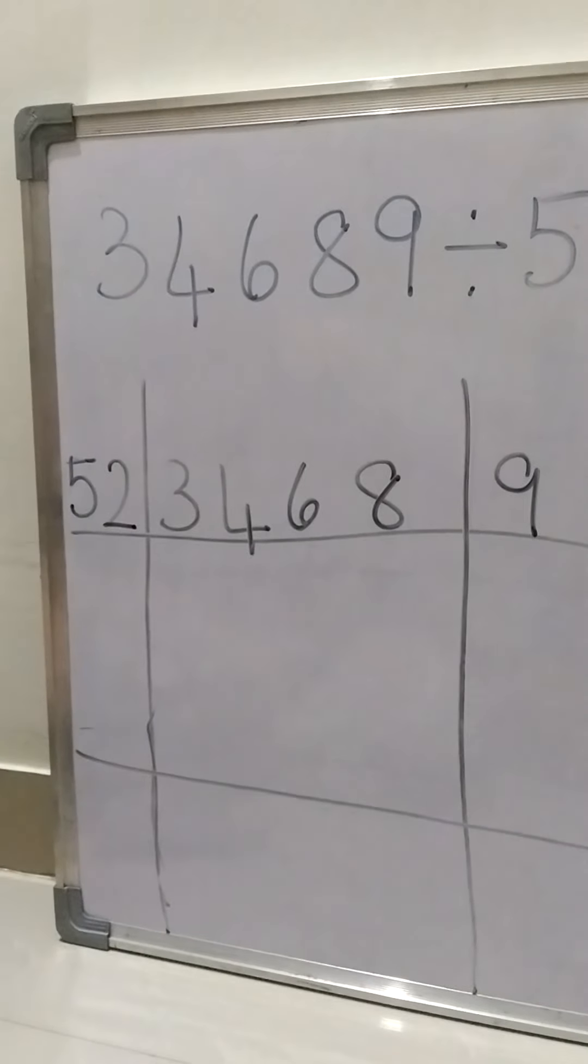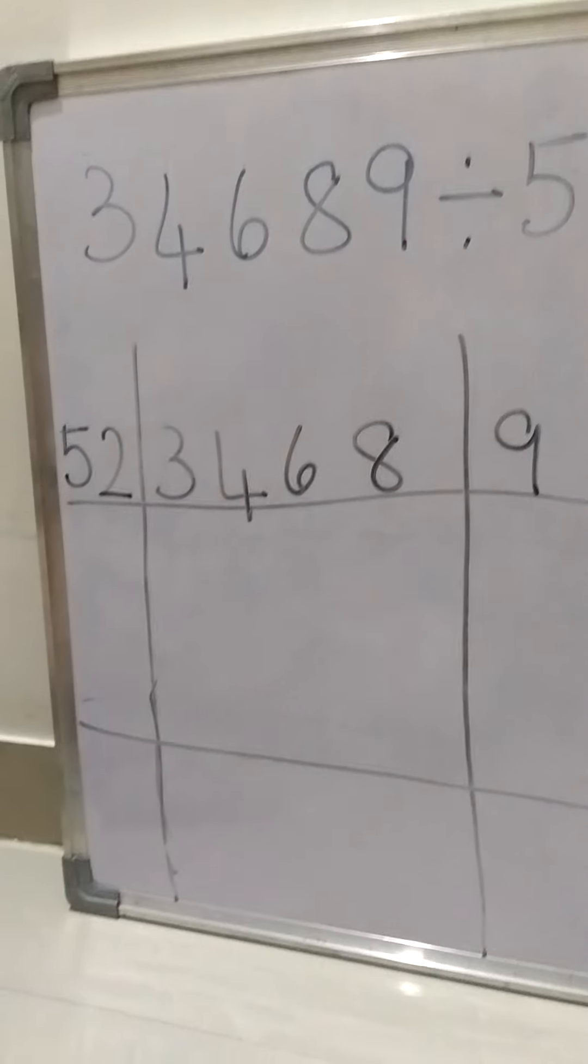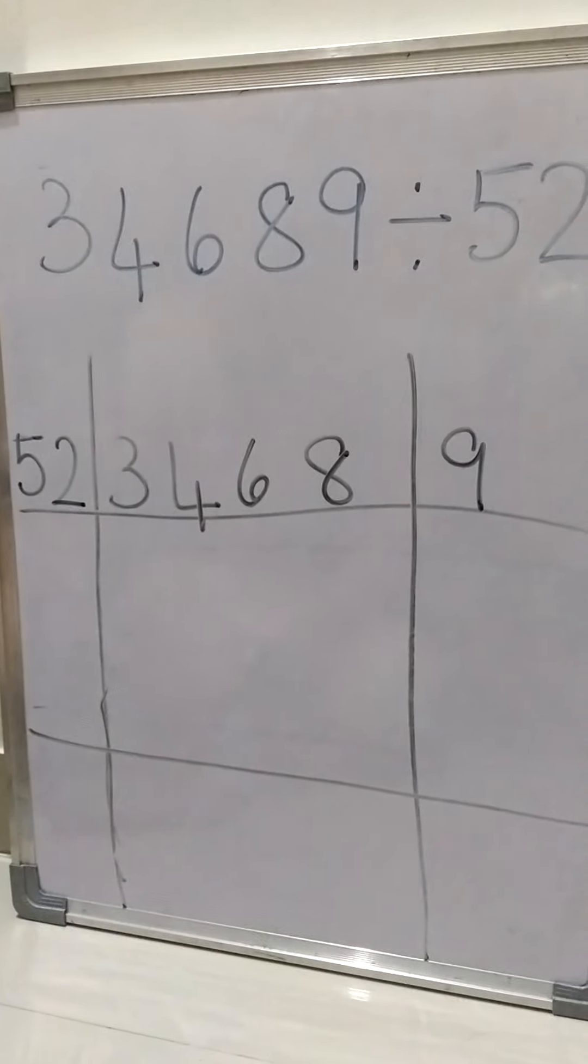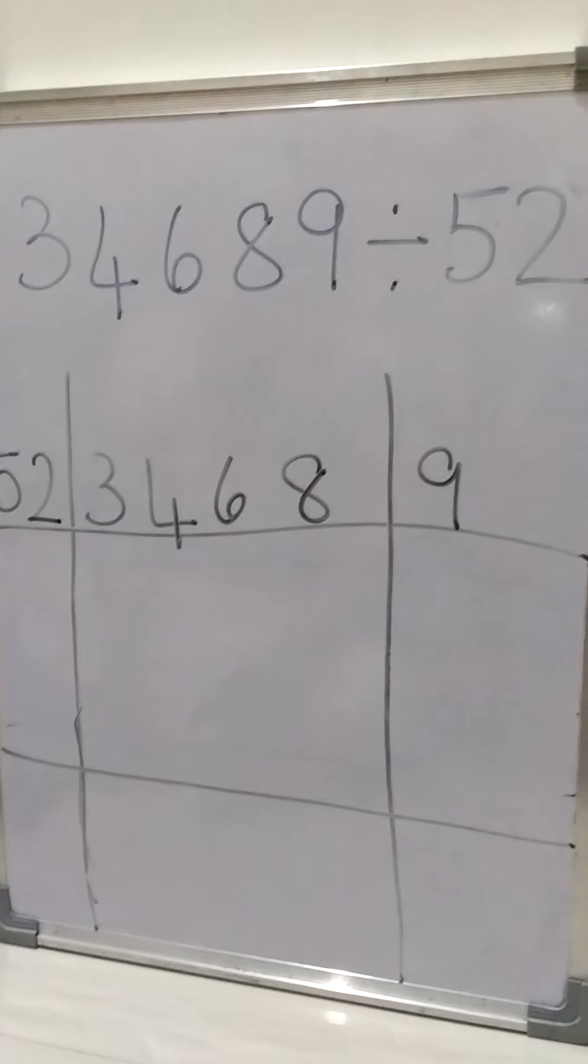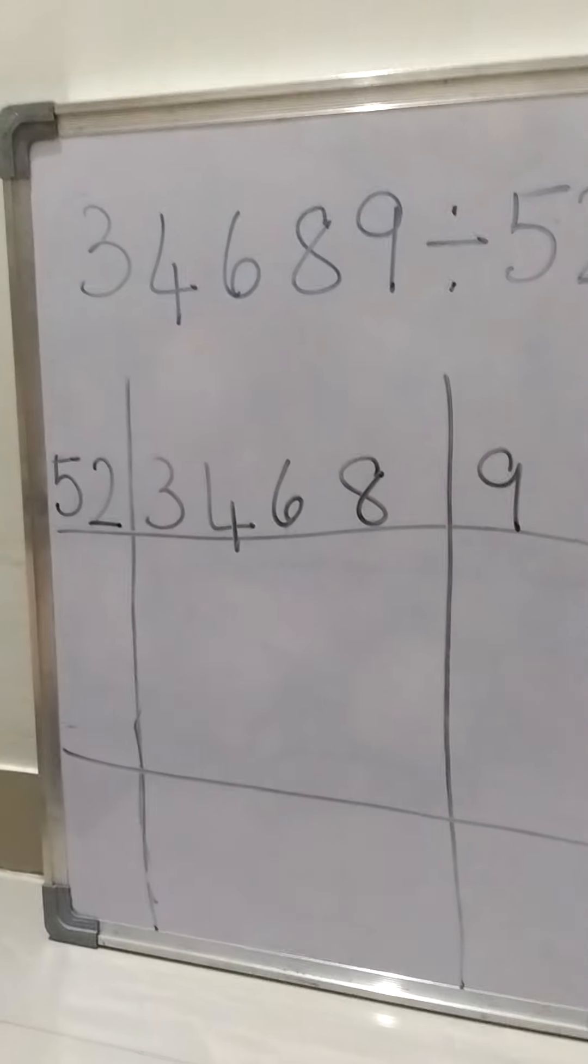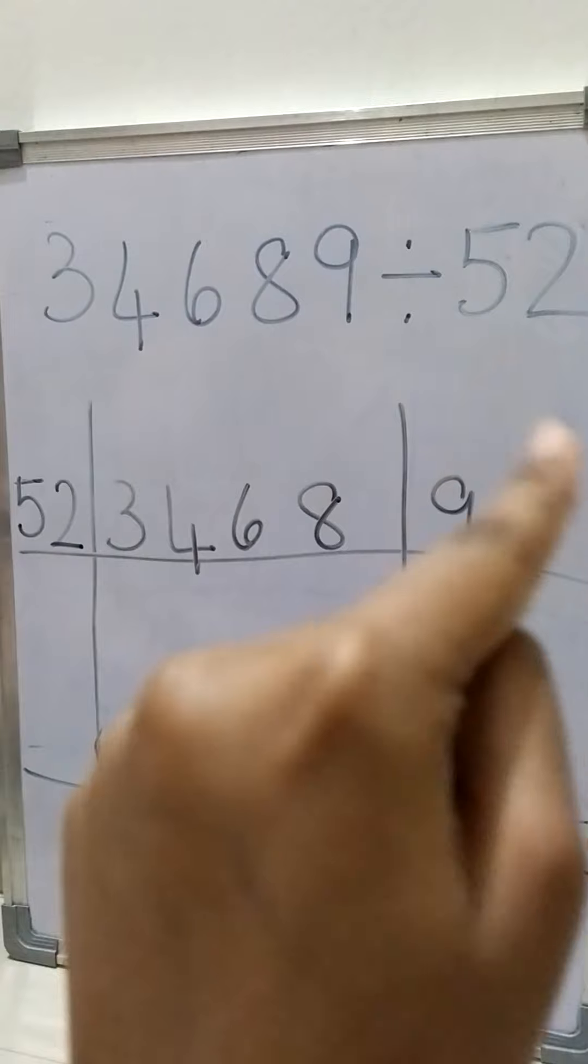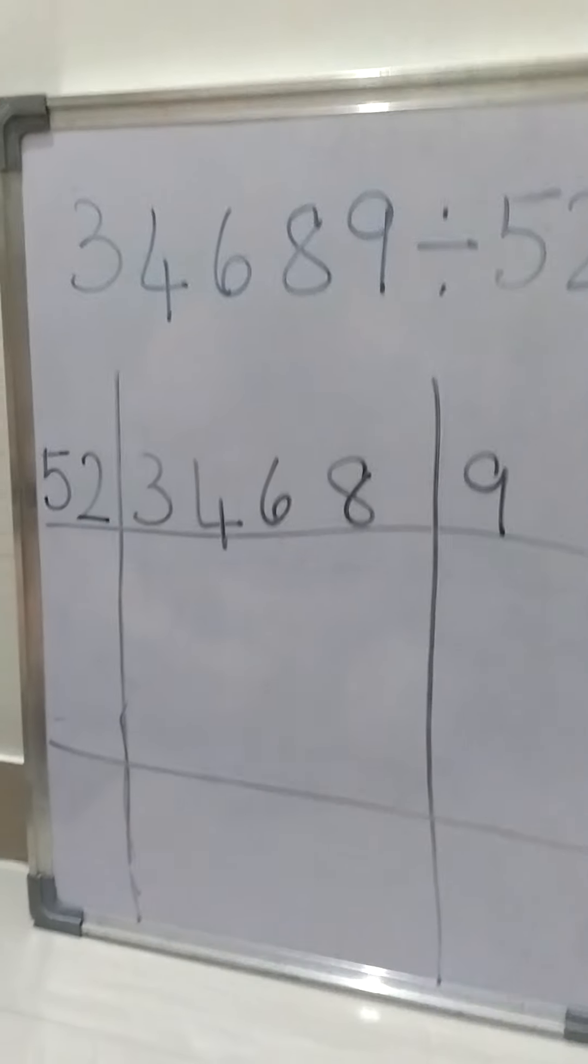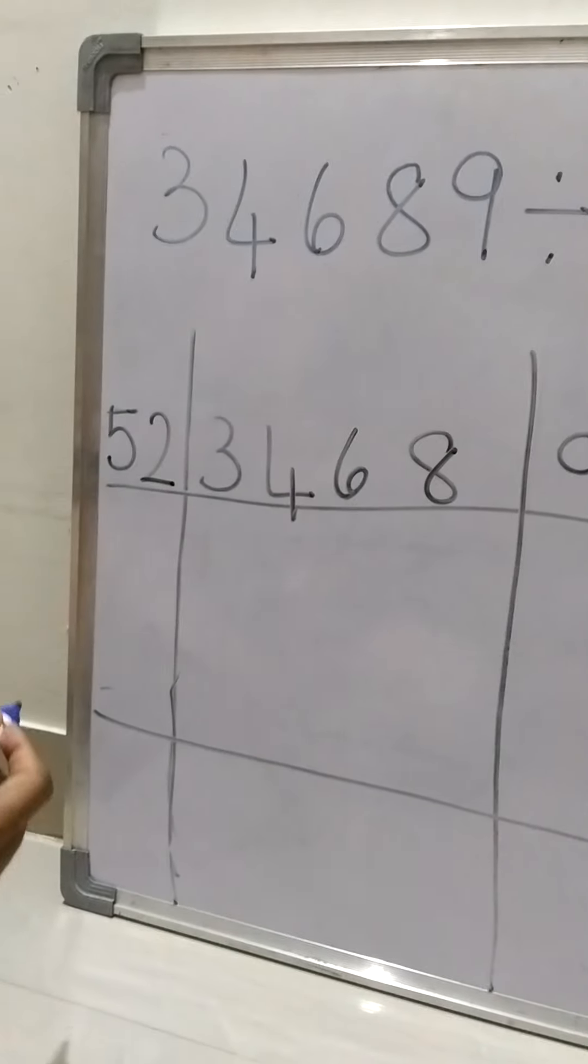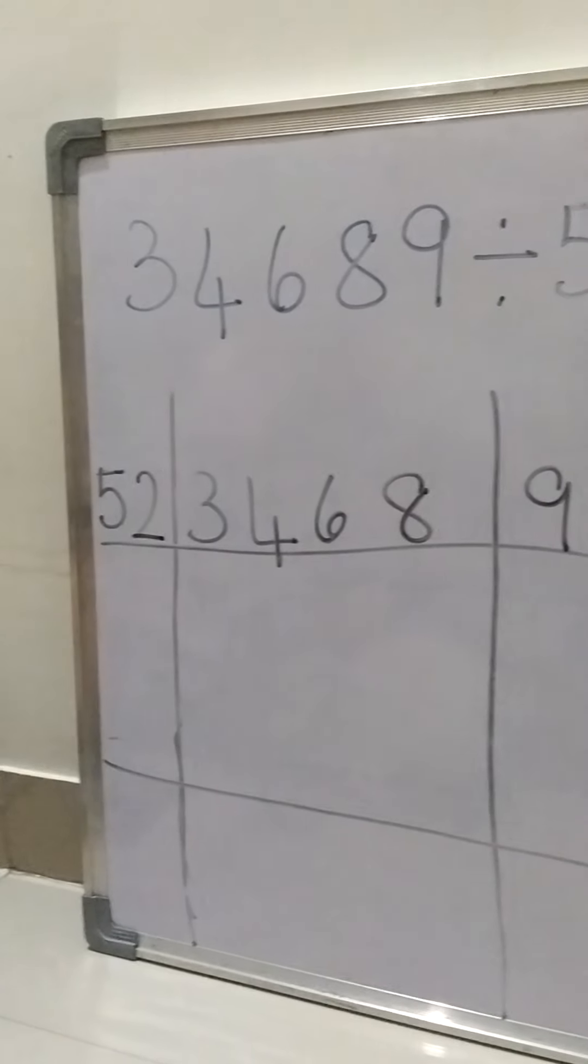Hi guys, today I am going to explain the second version, that is minus in division. So we are going to divide a number, 34689, by 52.